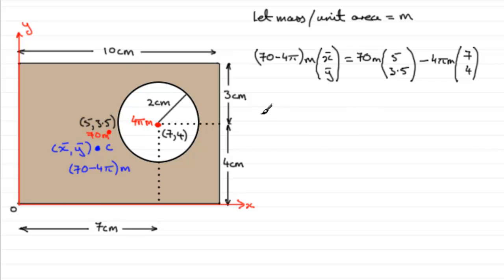All we need to do now is just simply work this out. We've got (70 - 4π) multiplied by (x̄, ȳ), because all the m's cancel out. This equals, and you've just got to do 70 times 5, minus 4π times 7, and you'll find that you get 262.035 and so on. If you do 70 times 3.5, minus 4π times 4, you'll find you get 194.734 and so on.